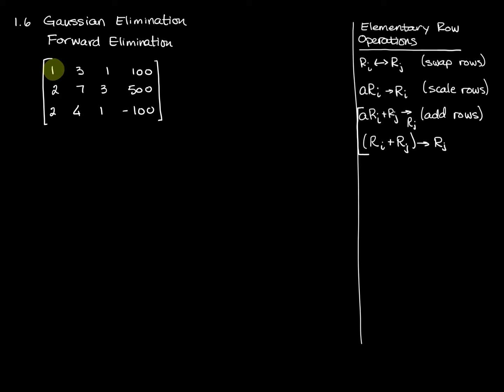Step two says if the current pivot is not in the first row, switch the first row with the row that contains the current pivot. In other words, if you have a zero in that position, then you might want to switch row two into row one's position so that you have a pivot in that first position.